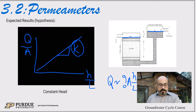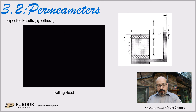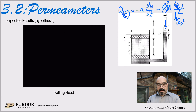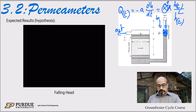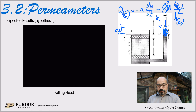For the falling head permeameter we have a different situation because now we have H as a function of time, H(t). From mass balance — in equals out — whatever flow comes in equals whatever flow goes out. The flow in is the area of the standpipe, little a, times dH/dt, giving volume over time. So Q_in equals Q_out, and Q_out, assuming a linear relationship, equals K·A·H over L. This is a differential equation we can solve by separating variables.